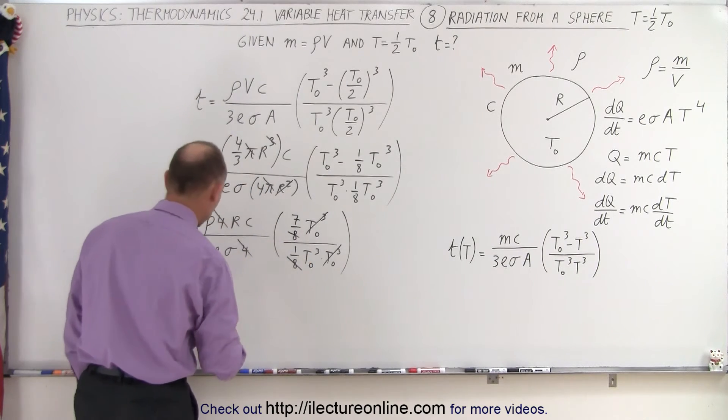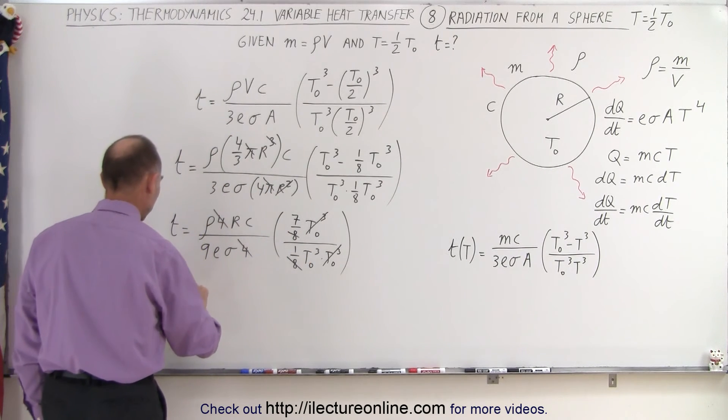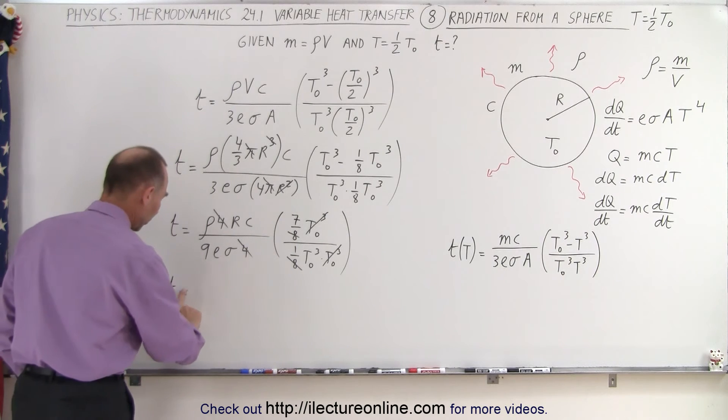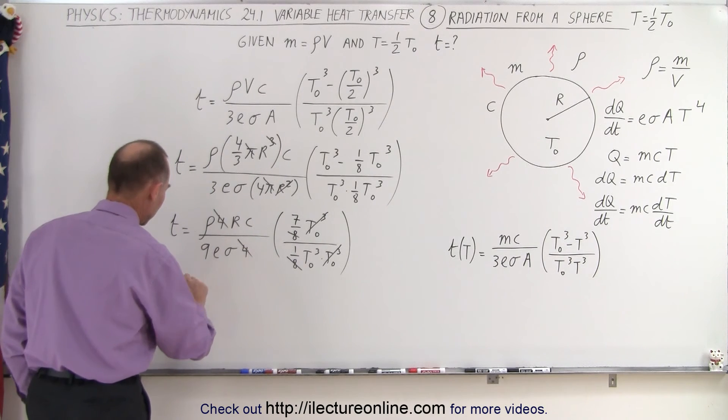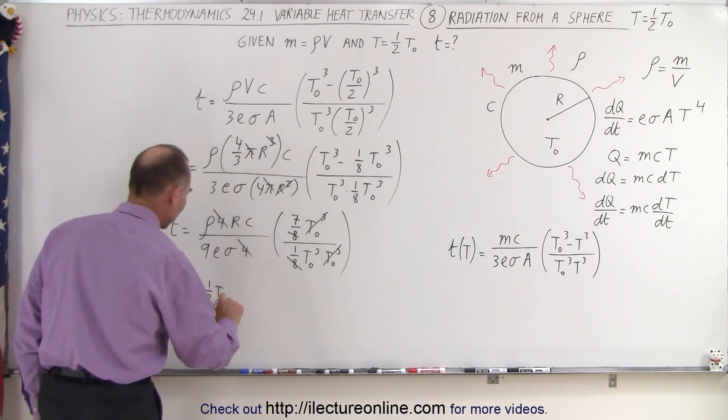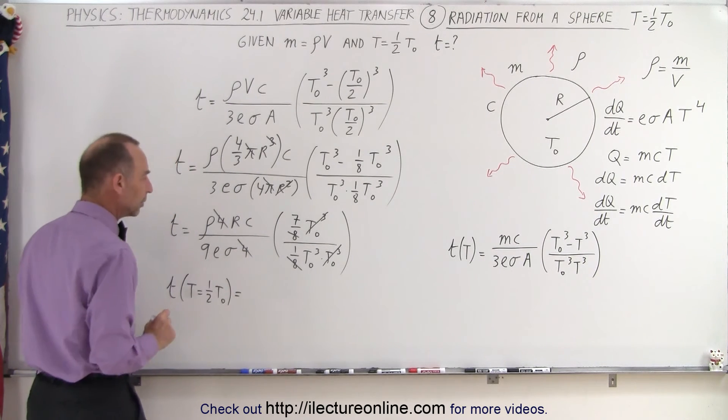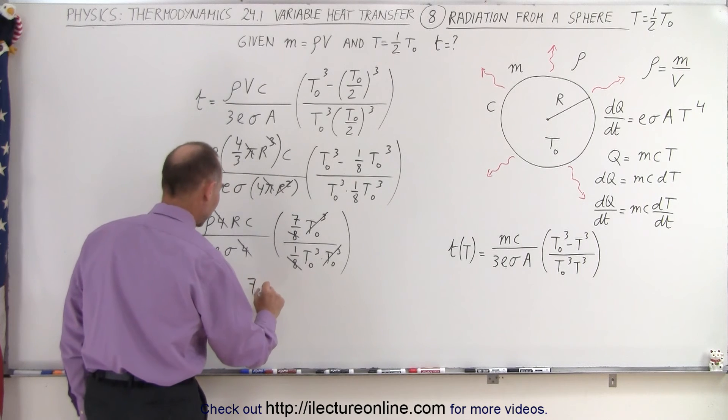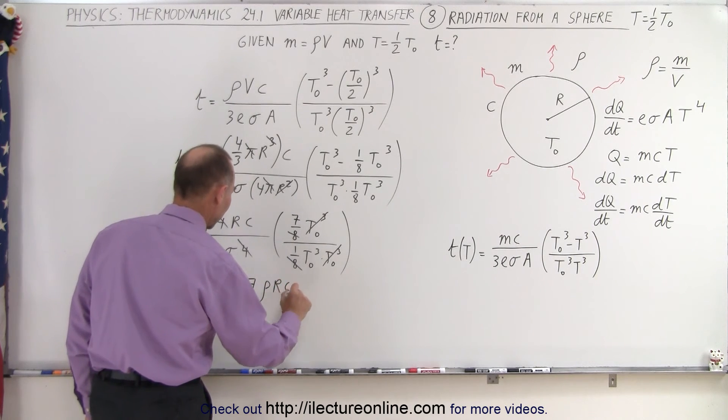So now the 7 transfers over here. So we end up with T is going to be equal to, or more specifically, T when the temperature is equal to 1/2 the original temperature, that is going to be equal to 7 times the density times r times C.